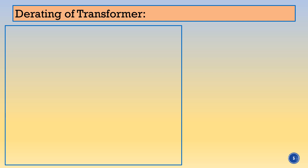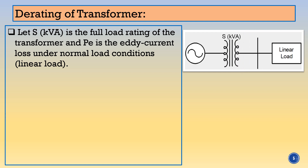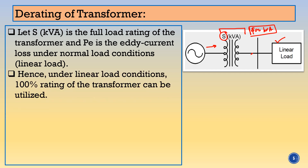Let's study what is the D rating of a transformer. Let S be the kVA rating of the transformer. If one source is connected to a transformer having rating S kVA and the load is linear in nature, you can utilize the full rating of the transformer. Suppose the transformer is designed for 100 kVA — then you can utilize this transformer fully up to 100 kVA without overheating. Under linear load condition, it is fully utilized.